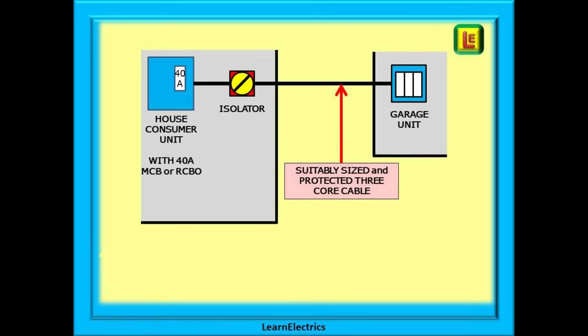Some electricians will install a 40 amp MCB at the house consumer unit if there is already an RCD protecting that circuit. The load will not exceed 40 amps with the devices shown in this video. Others prefer to install a separate RCBO for the garage unit.